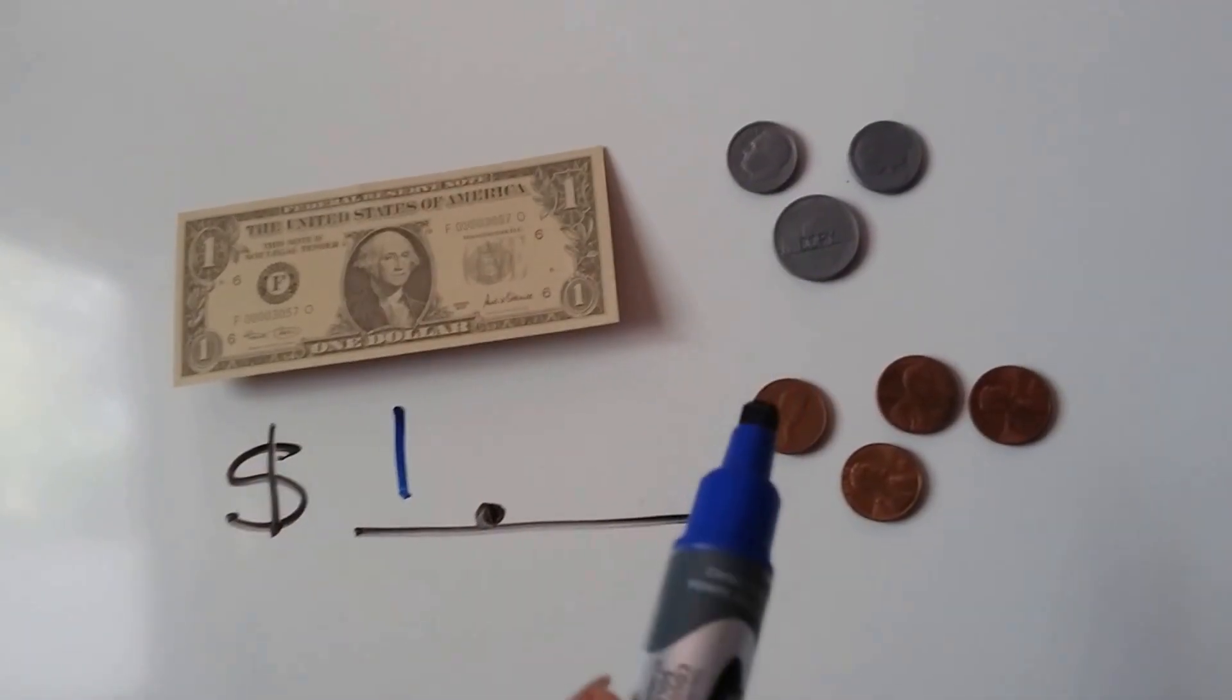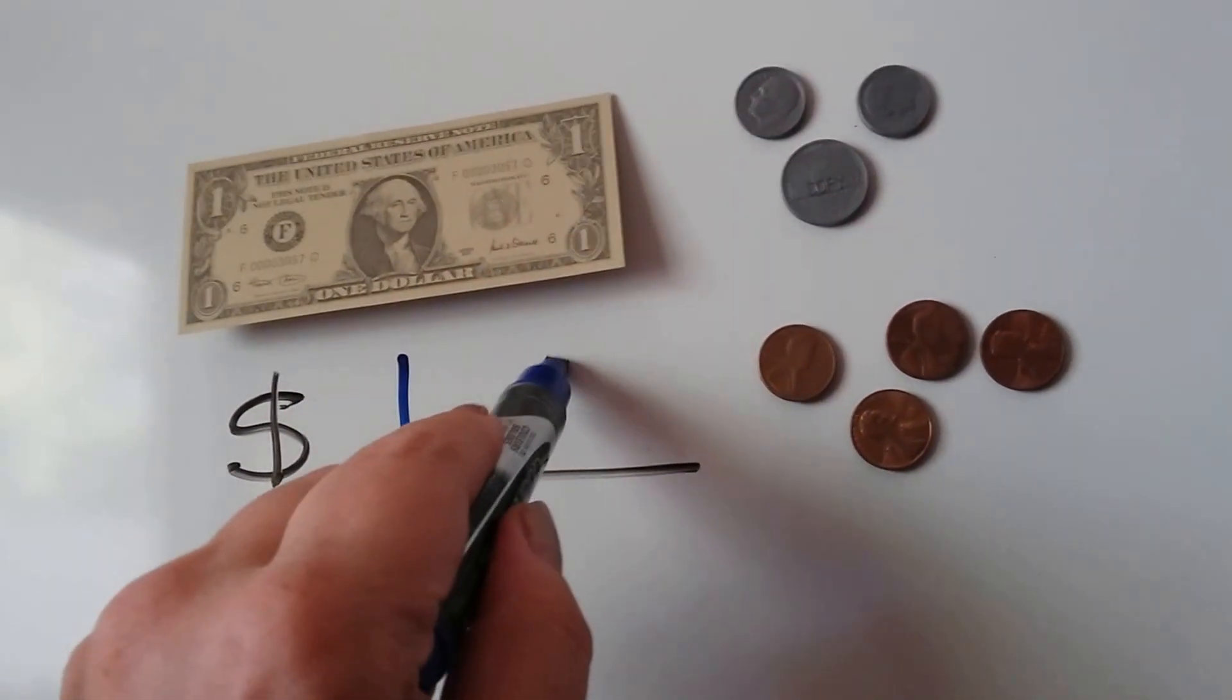2 dimes and a nickel. 25, 26, 27, 28, 29. $1.29.